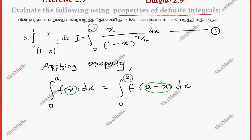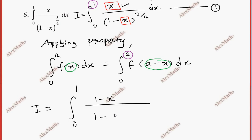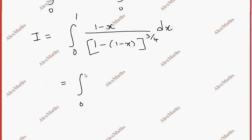So every x is replaced as 1 minus x. So property apply. So I is equal to integral 0 to 1. So x is equal to 1 minus x, denominator 1 minus of (1 minus x), this is whole power 3 by 4 dx. So here x equals integral 0 to 1, (1 minus x) whole divided by (1 minus 1 plus x).